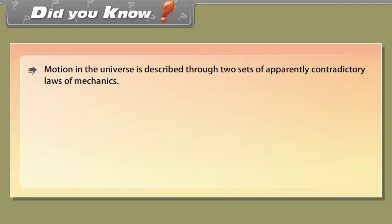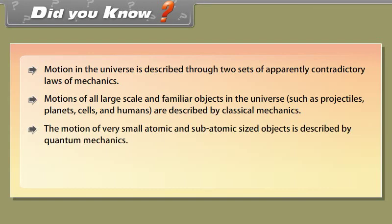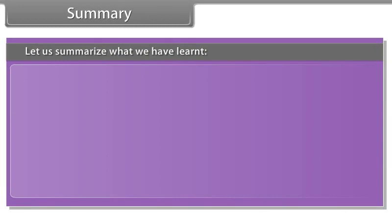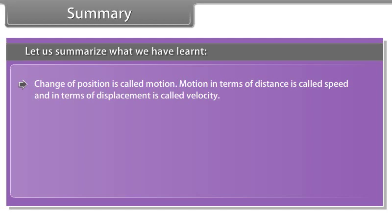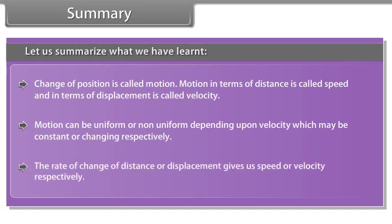Did you know: motion in the universe is described through two sets of apparently contradictory laws of mechanics. Motions of all large-scale and familiar objects in the universe — such as projectiles, planets, cells, and humans — are described by classical mechanics. Summary: change of position is called motion. Motion in terms of distance is called speed, and in terms of displacement is called velocity. Motion can be uniform or non-uniform depending upon velocity, which may be constant or changing respectively. The rate of change of distance or displacement gives us speed or velocity respectively.